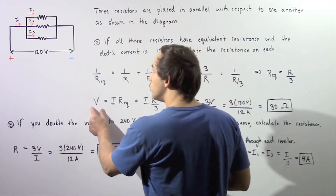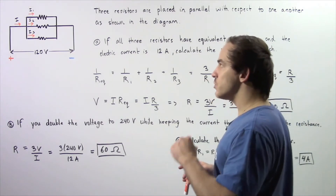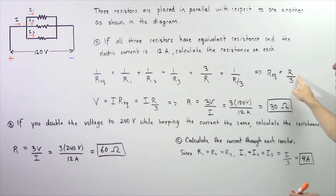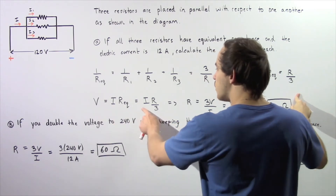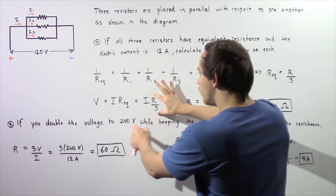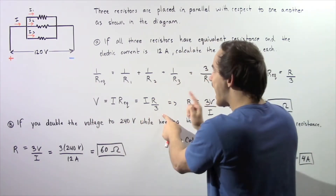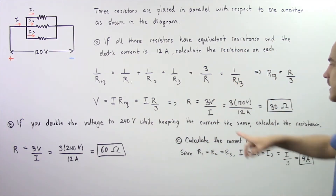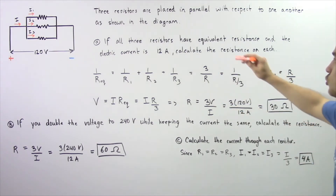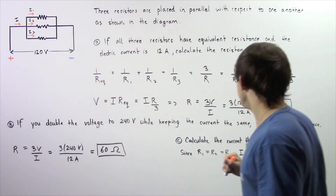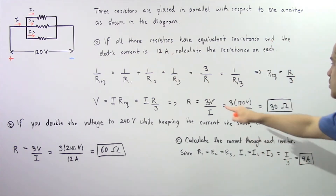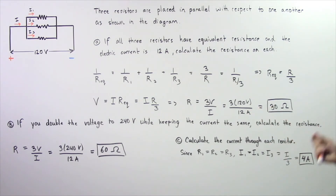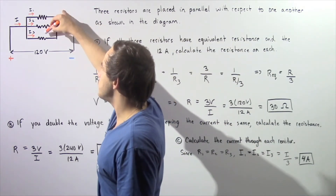Now let's apply Ohm's law. Ohm's law states that the voltage across that single resistor is equal to the product of the electric current through that resistor multiplied by the equivalent resistance, which is given to be R divided by three. So this is equal to I multiplied by R divided by three. We can solve for R: R is equal to three multiplied by V divided by I. So we know V is equal to 120 volts and I is equal to 12 amps. Three multiplied by 120 gives us 360, divided by 12 gives us 30 ohms.